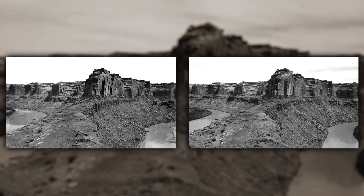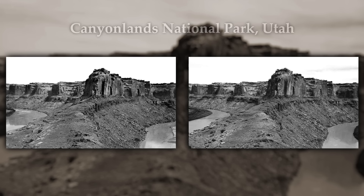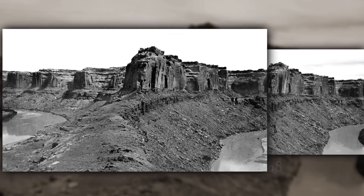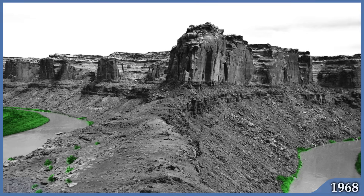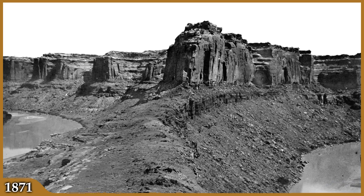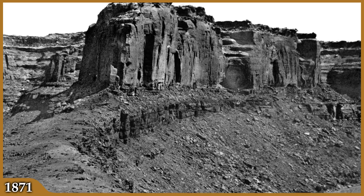Here are two photographs of Bonaut Bend on the San Juan River in Canyonlands National Park. The photo on the left was taken in 1871. The photo on the right was taken at the same spot 97 years later. Let's compare these photos to see how much has changed. The most obvious change is in the vegetation. The water level in the river has changed slightly, and with it the location of the plants along its banks. But if we focus on the geologic changes, there are very few differences between the photos.